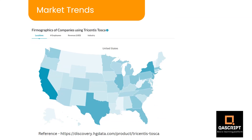Looking at market trends — this is a sample from a reference link provided below — the blue patches you see are companies using Tosca in the United States. This is the same story across Europe and different countries; it is slowly capturing the market. The trend is moving towards no-code or codeless automation tools. Even though Selenium is still at the top of the market, that may change in the coming years. There's no harm in learning a new automation tool even though it's quite different from historical script-based tools.